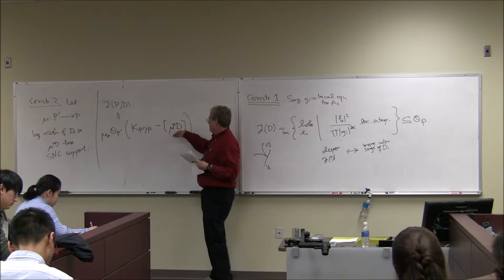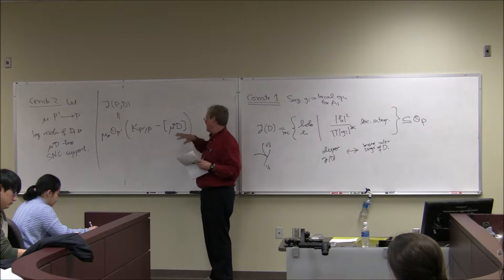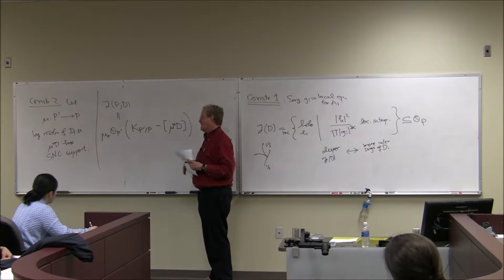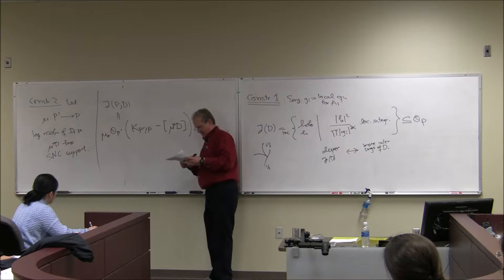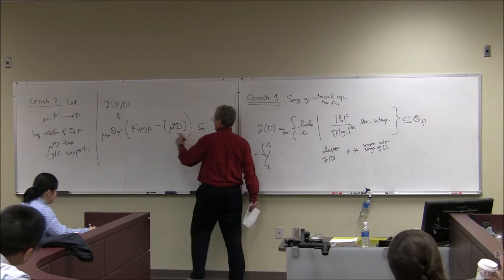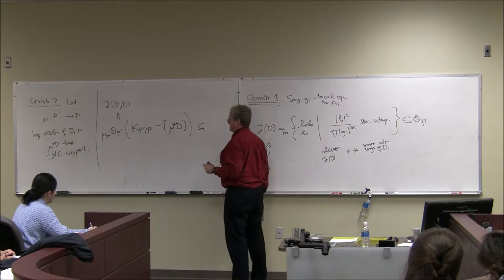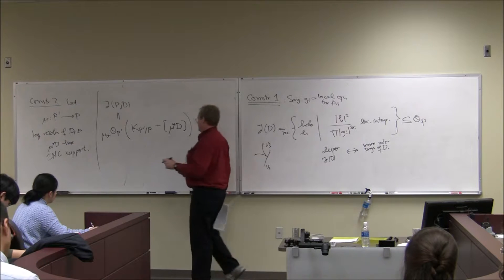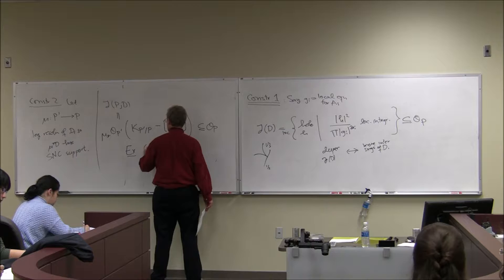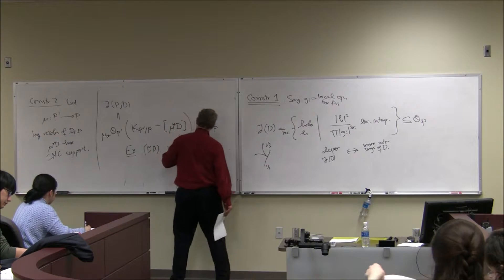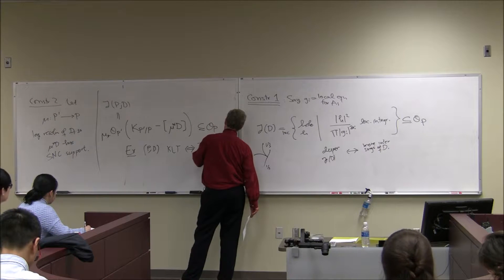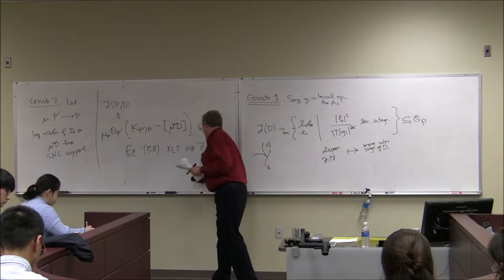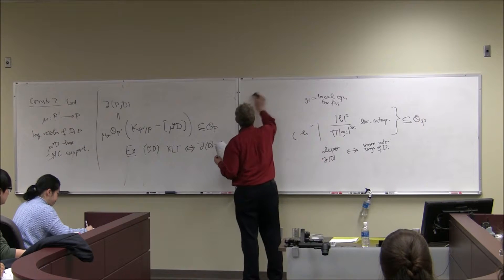When you pull back a Q-divisor you pull it back component by component, then take its integer part — wherever you see a fractional coefficient, just take the floor. The whole point is that taking integer parts doesn't commute with pullback. This lives inside O_P since pushing forward the relative canonical bundle from one smooth variety to another gives O. If P,D is Kawamata log terminal, this multiplier ideal is trivial — that's essentially one of the definitions of these singularities from the minimal model program.